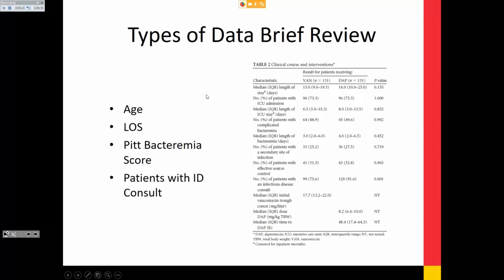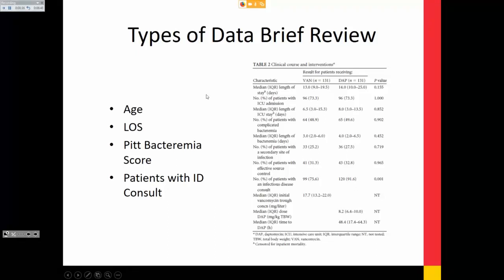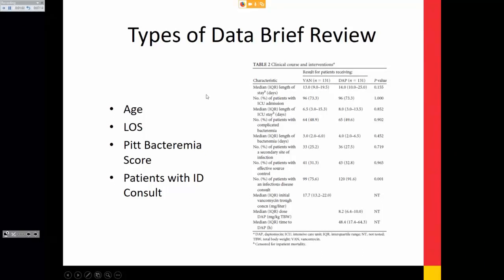The Pitt Bacteremia score: it's a score where you have ranked points, so it's ordinal. The points between the scores are not measured the same way — a Pitt Bacteremia score of one versus four doesn't mean it's four times the risk of mortality. That's different from ratio data like age, where going from 20 to 40 you can make that comparison. Pain scale and RASS score are the same — those are ordinal. You don't have a RASS score of 2.333, so they're not continuous. They're discrete and rank ordered.